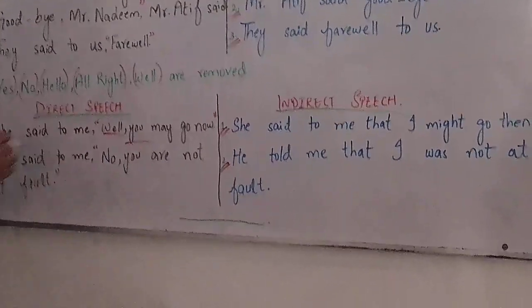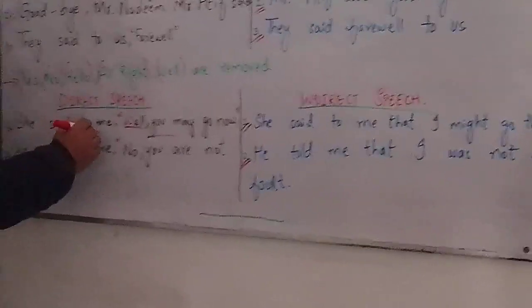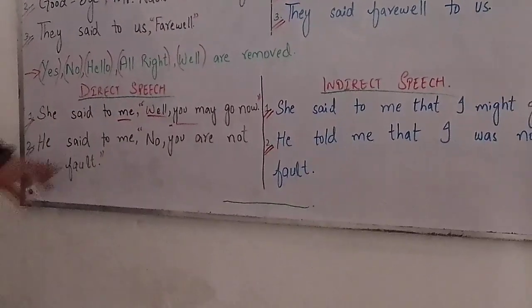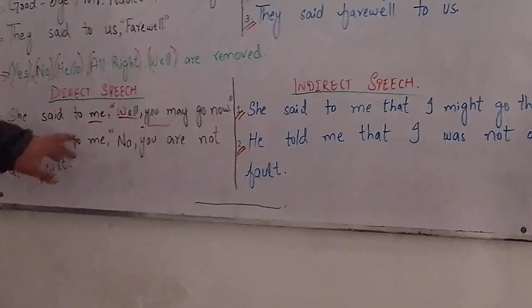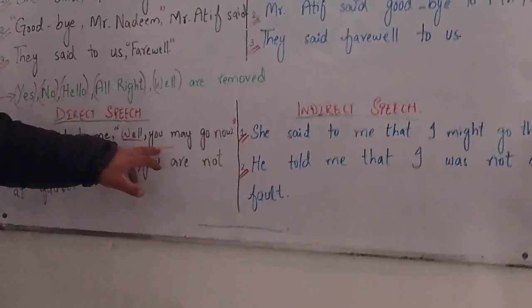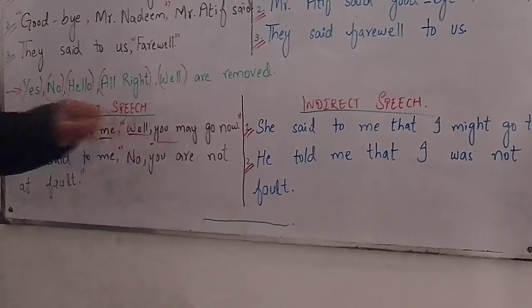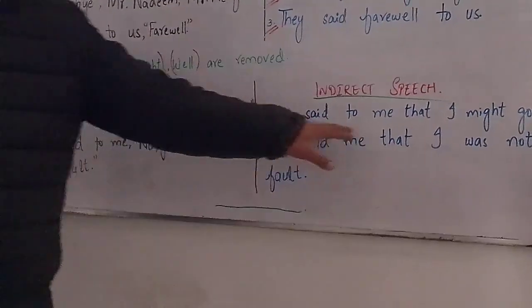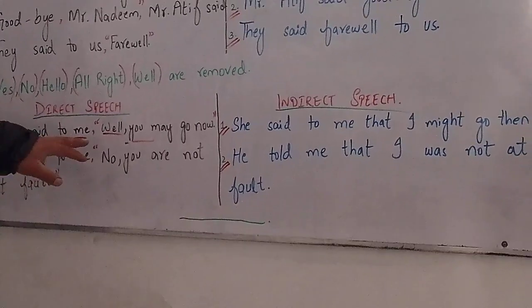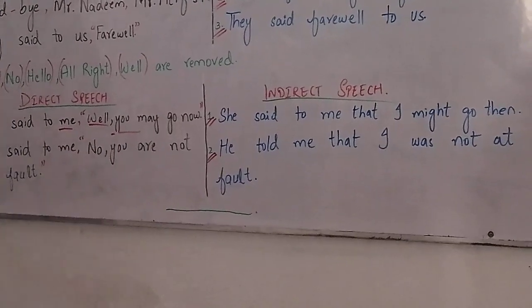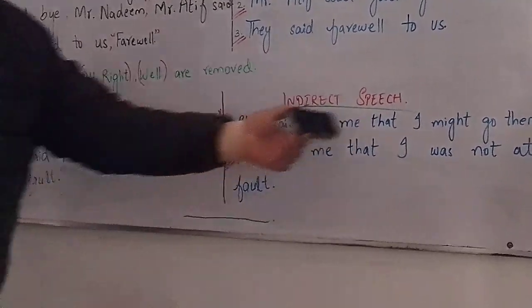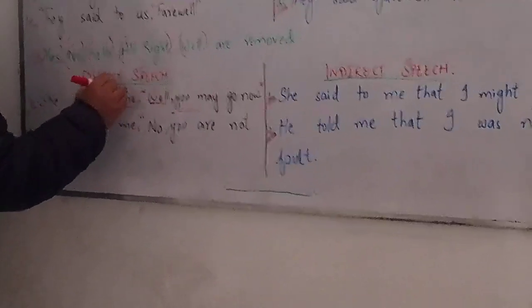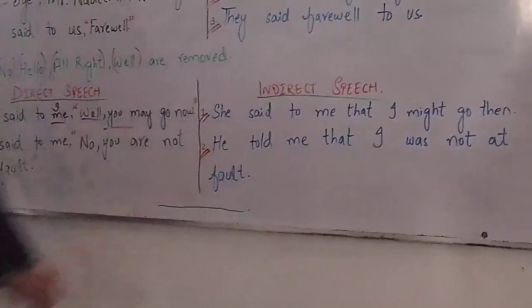The pronoun changes according to subject and object. 'You' is in the subjective case, and since 'me' is the object, 'you' changes into 'I'. Also, 'now' changes into 'then' in indirect speech. So the sentence becomes: she said to me that I might go then.